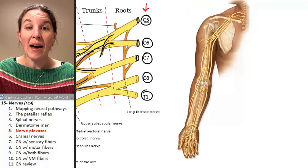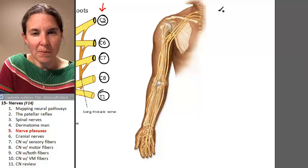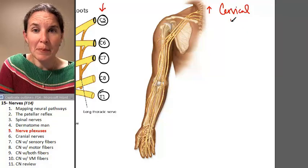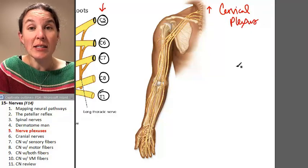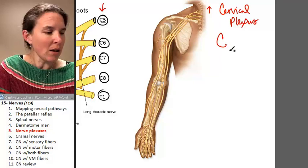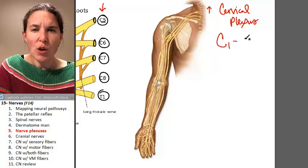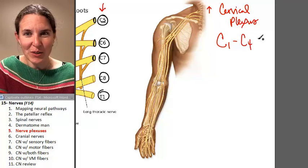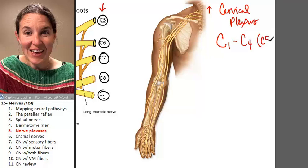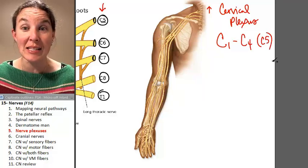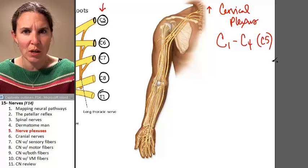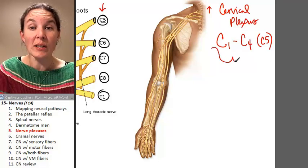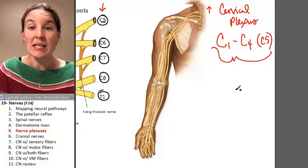We do have the cervical plexus. I'm going to write it right here, even though cervical plexus is up here. Cervical plexus is C1 through C4. Technically they don't include C5 in this mix. However, there are some C5 fibers that contribute to cervical plexus nerves. And in fact, there's one, the only cervical plexus nerve that we have to know is the phrenic nerve.